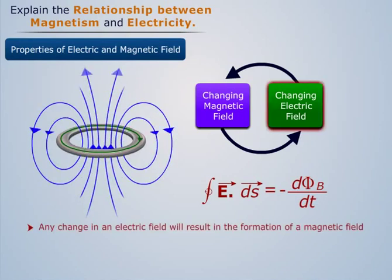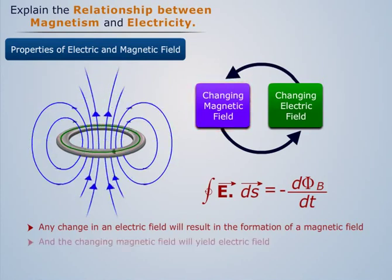Any change in an electric field will result in the formation of a magnetic field, and the changing magnetic field will result in the formation of an electric field.